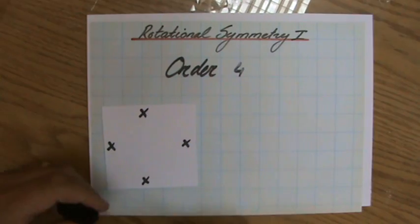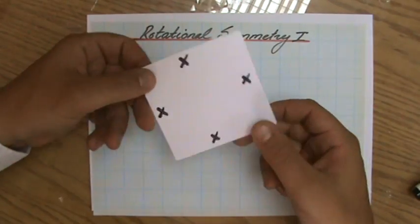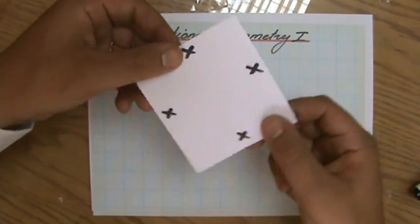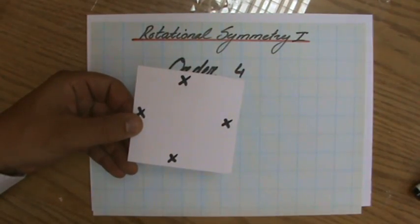It has a rotational symmetry of order four, because in one full turn, it looked one, two, three, four times the same. Okay, order four.